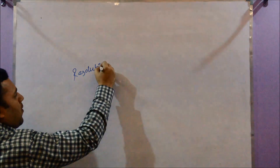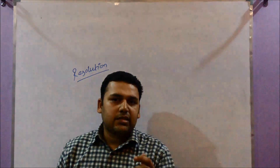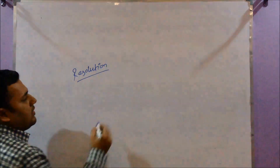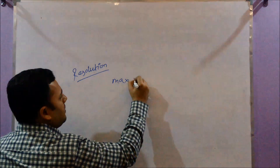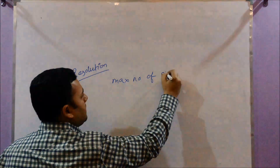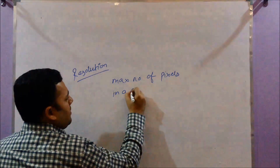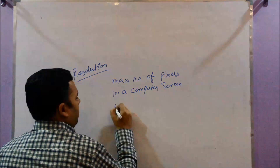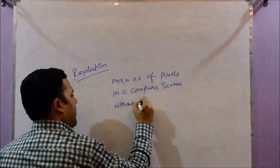In the last lecture, we saw computer graphics definition, aspect ratio, and resolution. So we define resolution once again: the maximum number of pixels in a computer screen without overlap.